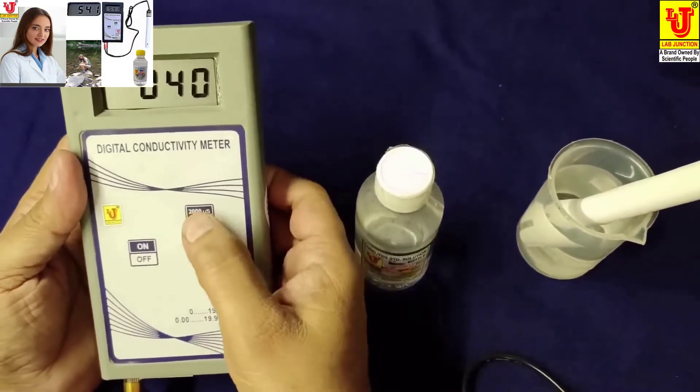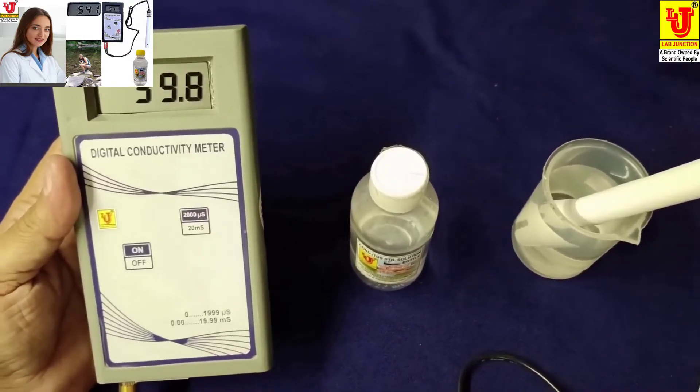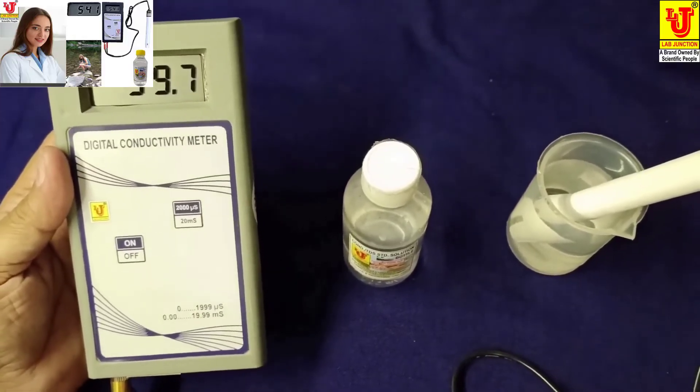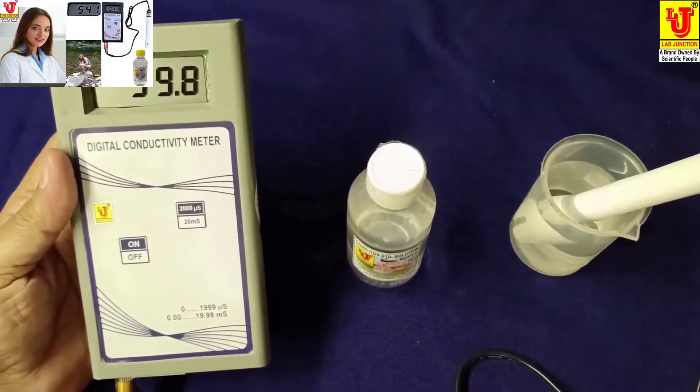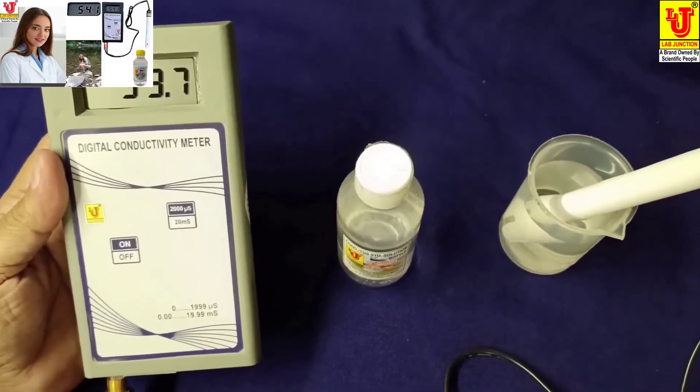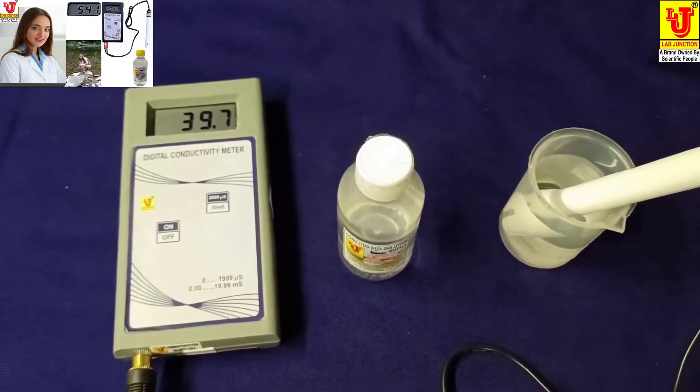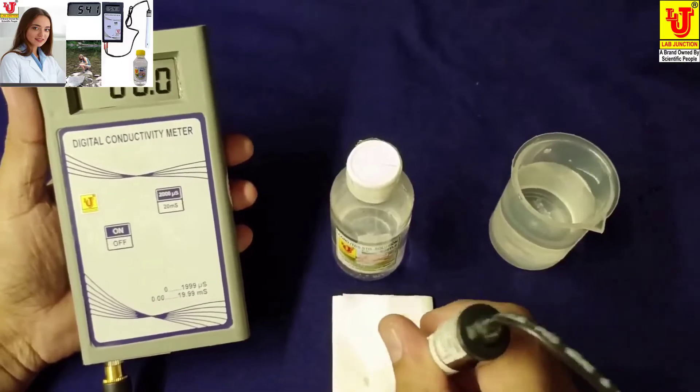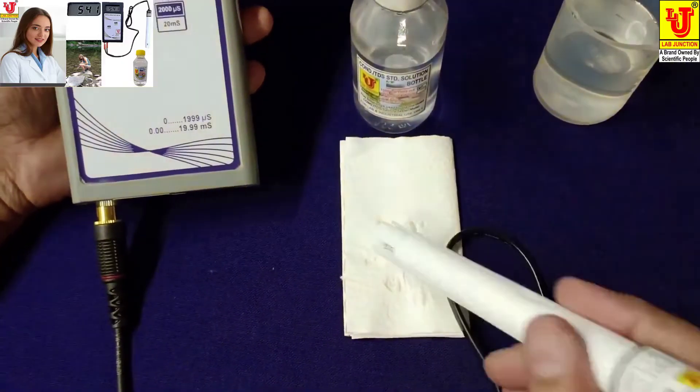Directly switch on the instrument and dip your conductivity cell in your sample for analysis. When you're changing another sample, then refresh with tissue paper like this.